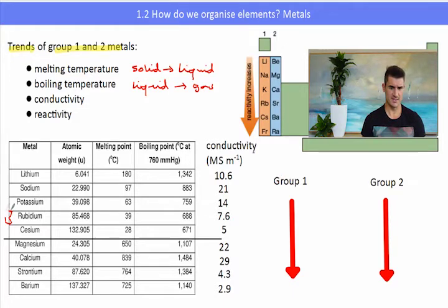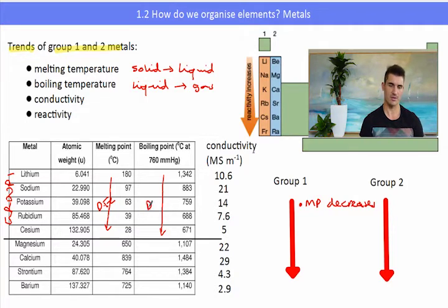Going down group 1. Lithium, sodium, potassium, rubidium and caesium. If we look at the melting point, we can generally see that the melting point gets less. So as we go down group 1, the melting point decreases. Lithium 180, all the way down to caesium which is 28. So the melting point of group 1 decreases. And so does the boiling point. It gets easier to turn them from a liquid to a gas. So the boiling point also decreases.